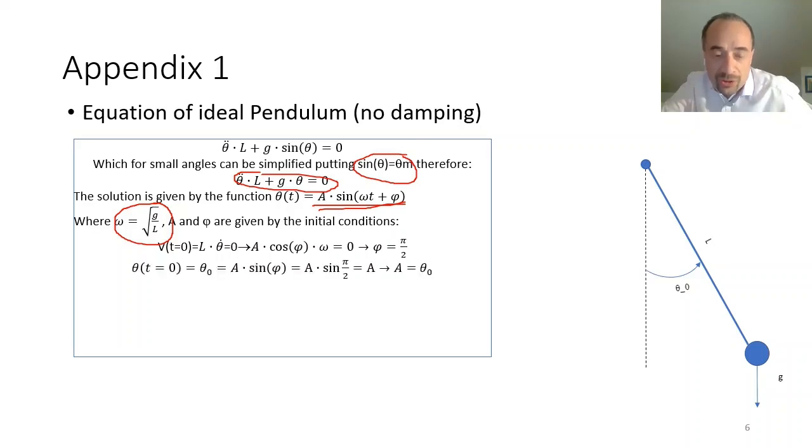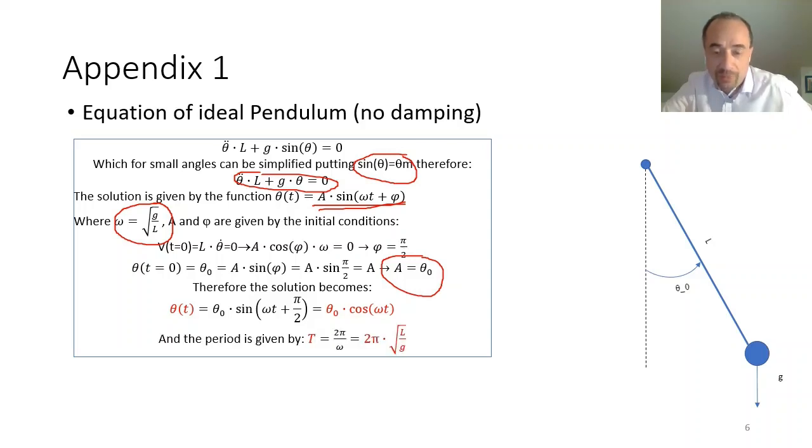Theta for t equals zero is theta zero, the maximum elongation, which in case of the simple pendulum does not change. And by means of that, we get A equals theta zero. And the solution becomes theta zero times sin of omega t plus pi divided by two, which is theta zero times cosine omega t. And the period is given by this formula.